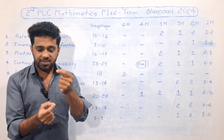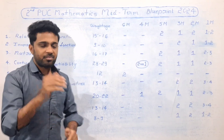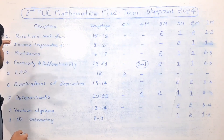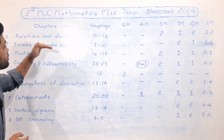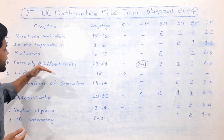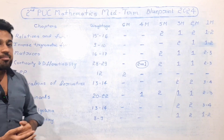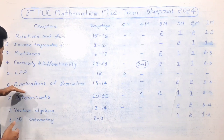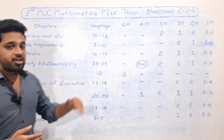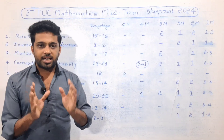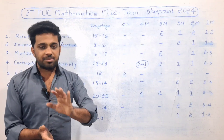The six chapters in the mid-term syllabus are: Relations and Functions, Inverse Trigonometric Functions, Matrices, Continuity and Differentiability, LPP (Linear Programming), and Applications of Derivatives. These chapters are covered across almost all districts in the mid-term syllabus.